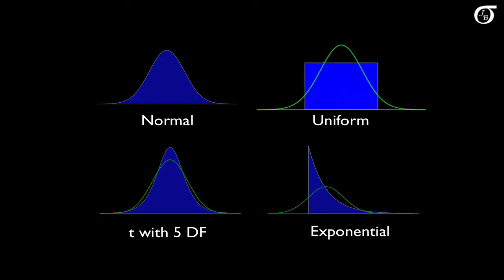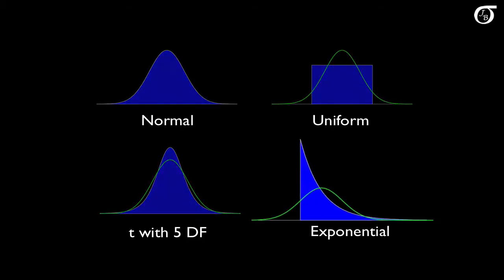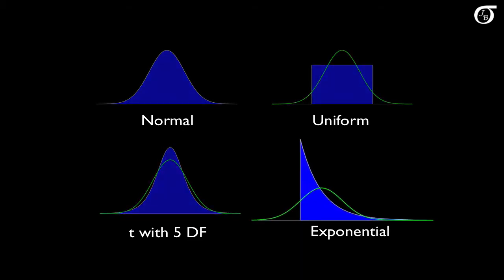One distribution is the uniform distribution, given here in blue. The superimposed green curve is a normal curve with the same mean and variance. We'll also be sampling from a t-distribution with 5 degrees of freedom, and from the exponential distribution.